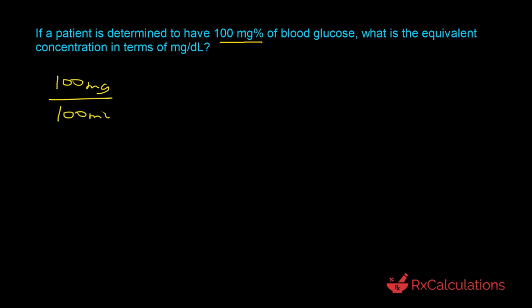The way we want to approach this question is to express 100 milligram percent based on its definition — that is, 100 milligrams in 100 milliliters. We can then use dimensional analysis to convert from milligrams per milliliter to milligrams per deciliter. The conversion factor is: one deciliter equals 100 milliliters. The milliliters cancel out, and so you're left with 100 milligrams per deciliter. So 100 milligram percent is equivalent to 100 milligrams per deciliter — the two are essentially the same.